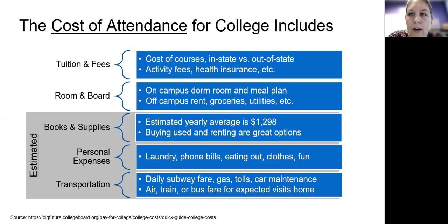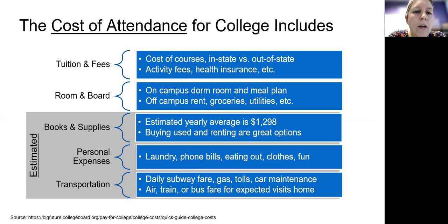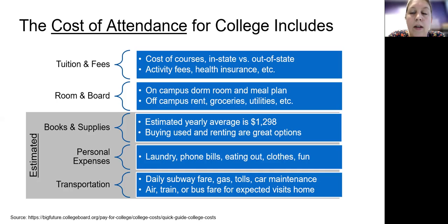The estimated indirect costs are also included in the cost of attendance for college, and these include books and supplies, which a student will purchase on their own, personal expenses like doing their laundry, paying phone bills, and they estimate every year a certain amount that the average student at their university spends on fun, miscellaneous items, etc.